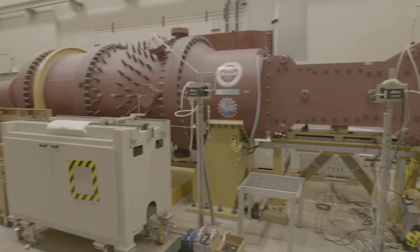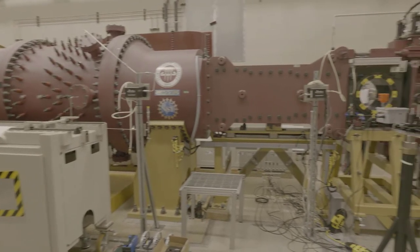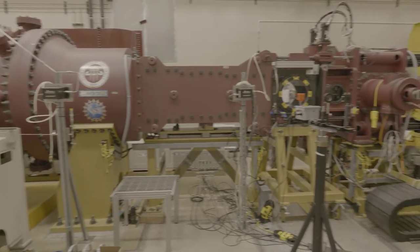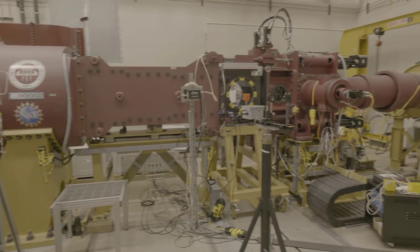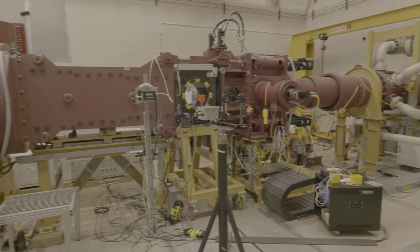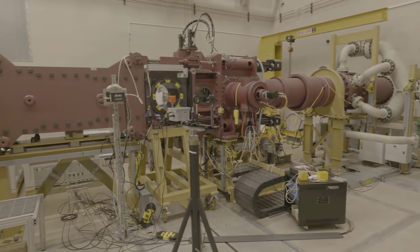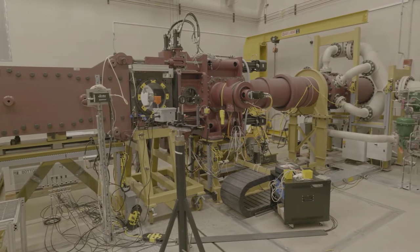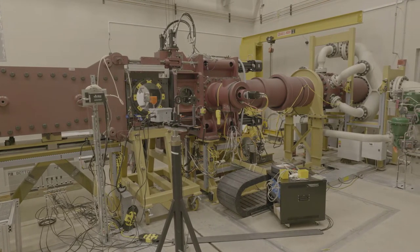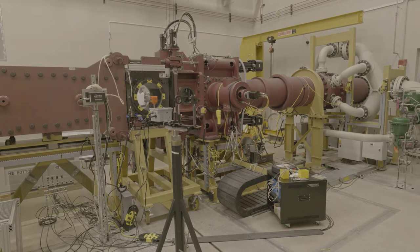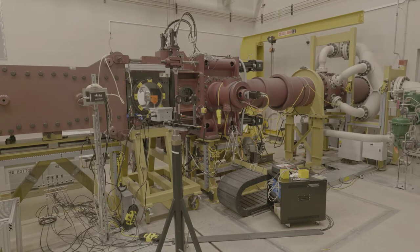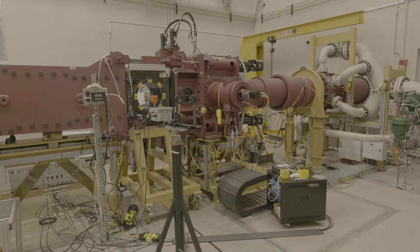Subsonic Mach numbers are controlled with a choke finger downstream of the model support system. Transonic Mach numbers above Mach 1 are controlled with a plenum blow-off. Supersonic Mach numbers are achieved with fixed nozzle blocks. Typical run times are between 30 to 90 seconds. The facility incorporates unique design features to facilitate low test section noise and extensive optical access for advanced flow diagnostics.